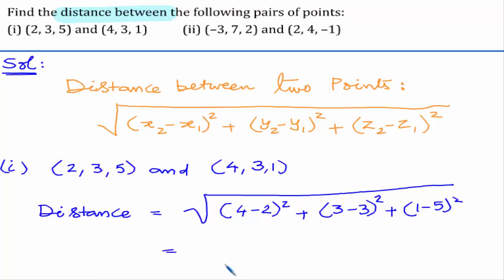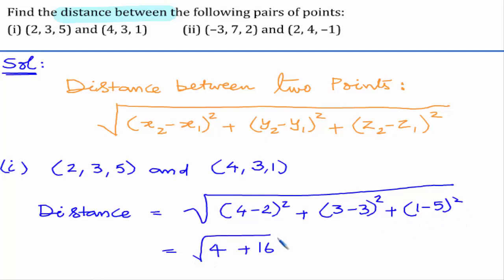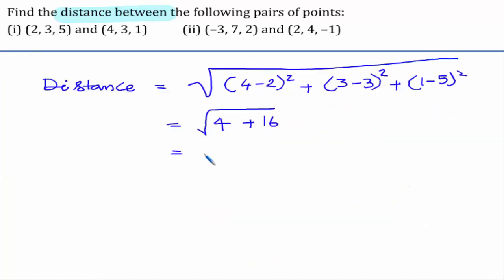This gives us: 4 minus 2 is 2, whole square is 4; 3 minus 3 is 0; and 1 minus 5 is minus 4, whole square is 16. This gives us square root of 20, that is 2 root 5 units.